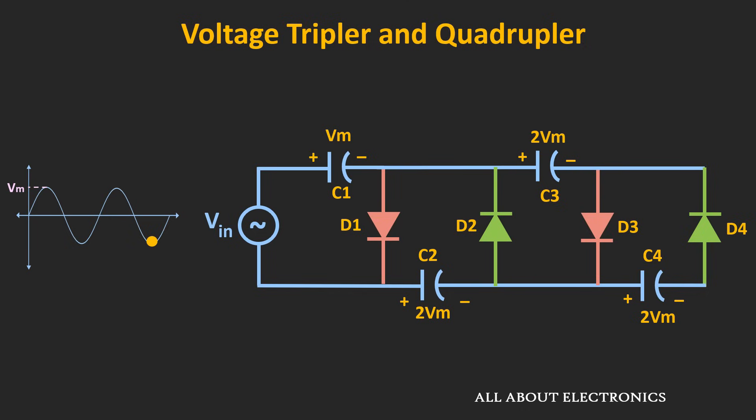By cascading more stages, we can multiply the input voltage further. However, as we keep increasing the number of stages, the ripple in the output voltage will also increase. At the same time, the current capability of the circuit will reduce, because these voltage multiplier circuits are typically used for very light loads.